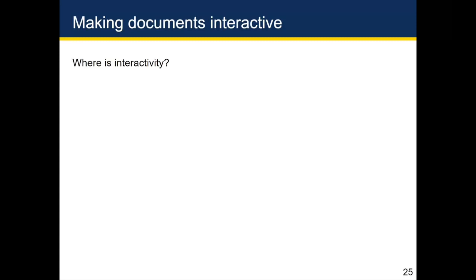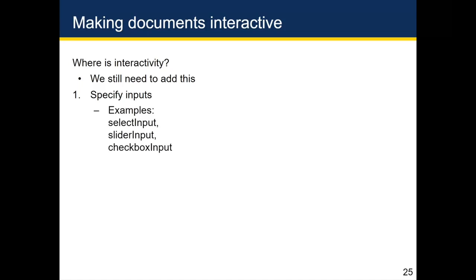So where is the interactivity? So far, all I've done is make our Markdown document show up in a browser in a really complicated way. We still have to add interactivity, which we'll cover next. Here's the recipe: after addressing the header, adding the packages, and the mechanics of running the document in a browser, the first thing we need to do is specify our inputs — examples include a select input, a slider input, and a checkbox input. Next, you'll need to link those input values back to your analysis.